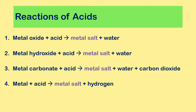To start off with a review of the reactions of acids that we know: we know three neutralization reactions. Metal oxide plus acid produces a metal salt plus water. Metal hydroxide plus acid gives a metal salt plus water. Metal carbonate plus acid gives a metal salt plus water plus carbon dioxide. And the reaction of metal and acid gives a metal salt plus hydrogen.